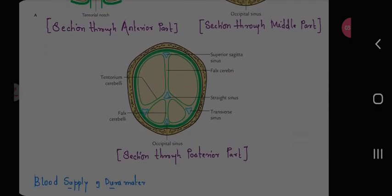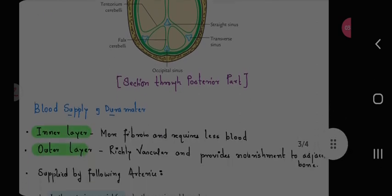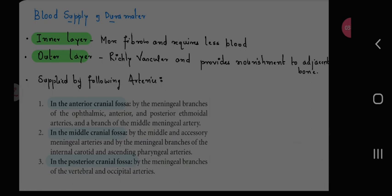Blood supply of dura: inner layer is more fibrous and requires less blood. Outer layer is richly vascular and provides nourishment to adjacent bones. Supplied by following arteries: